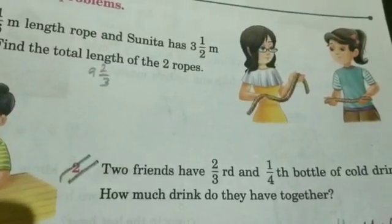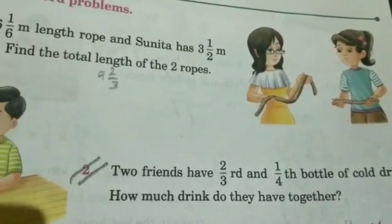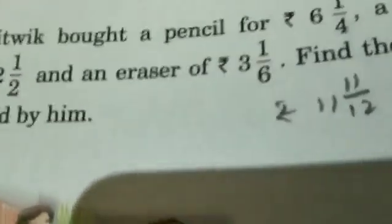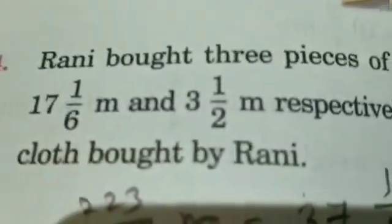Question number 2 is again the same way you need to follow. Question number 3 has 3 terms to be added. Again here total amount is written. That means you need to add. Then question number 4 is also the same. You need to add the 3 terms. So you will do question number 2, 3, and 4 as homework.